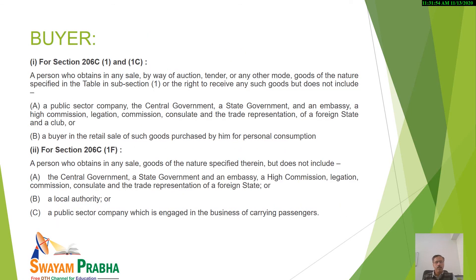Now, in order to know TCS and its applicability in a better way, we must know who is the buyer, who is considered to be the seller, and what are the specified goods. As far as section 206C subsection 1 and 1C are concerned, a buyer is a person who obtains in any sale by way of auction, tender or through any other mode goods of the nature specified in the table in subsection 1.